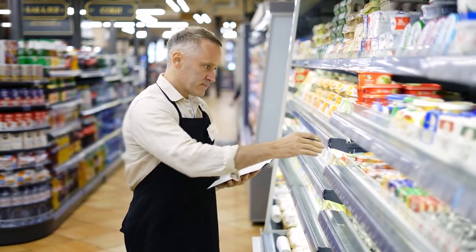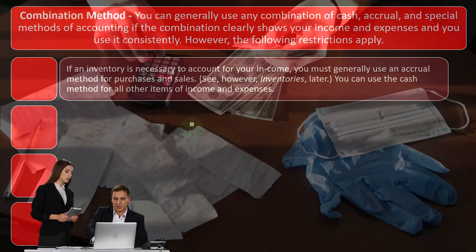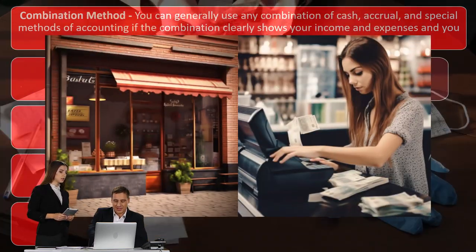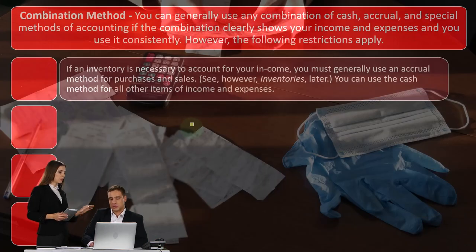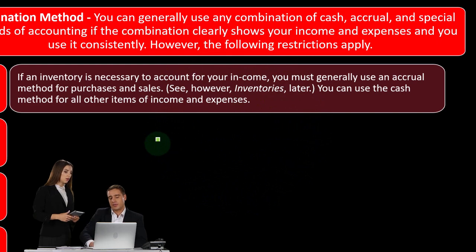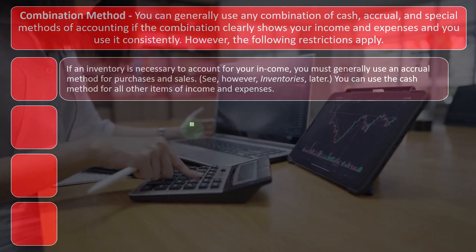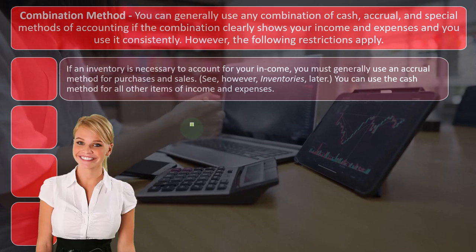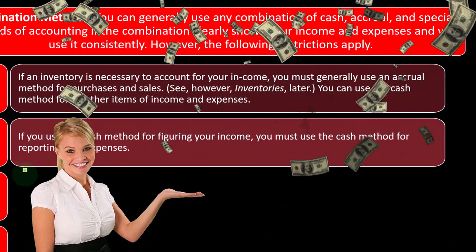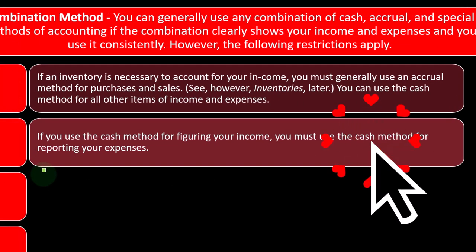We want to match those two things up generally. So you can use the cash method for all other items of income and expenses. That's kind of a hybrid method, which is practical for a lot of small businesses, because many expenses you have can be recorded via bank feeds — electronic transfers — basically a cash-based kind of system. So then if you use the cash method for figuring your income, you must use the cash method for reporting your expenses as well.